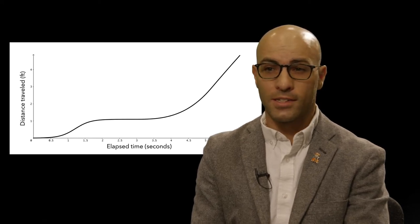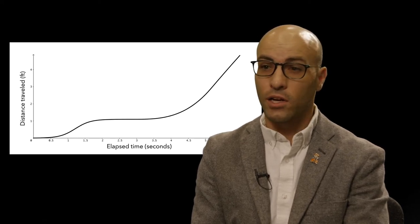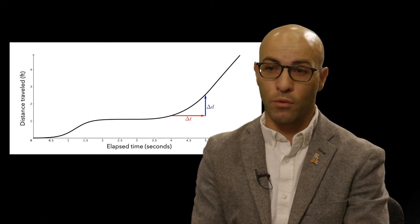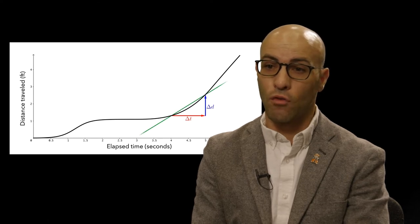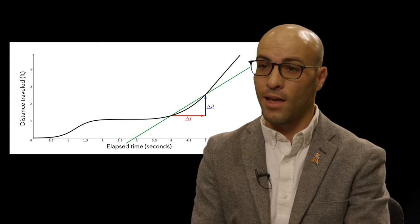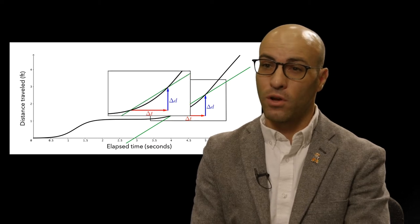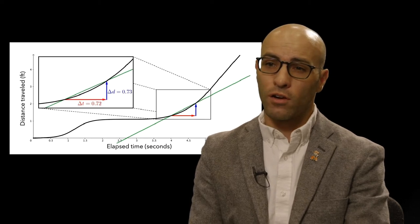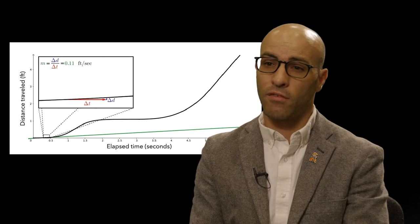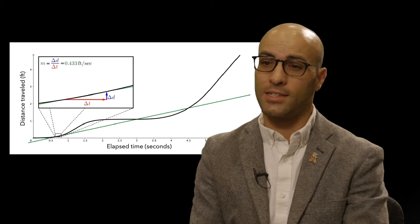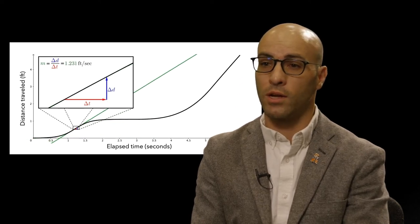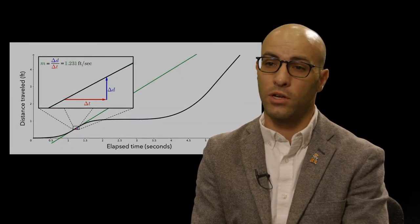For any x value in the domain of f, there is an interval sufficiently small containing the x value over which f of x varies at essentially a constant rate with respect to x. Since f is not a linear function, f of x does not vary at a constant rate with respect to x over any interval of f's domain. However, over intervals sufficiently small, the co-variation of f of x and x is indistinguishable from quantities that vary at a constant rate with respect to each other.